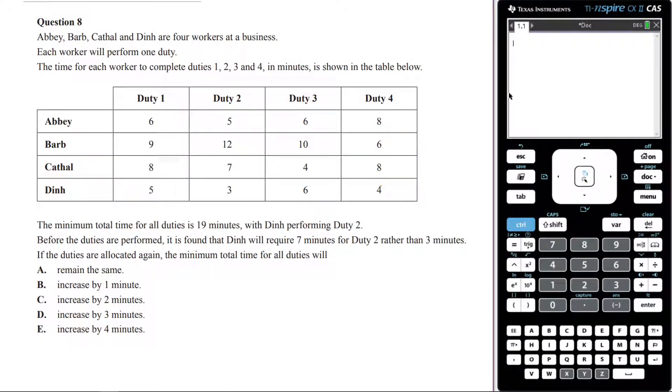Let's now answer the last question, which says: Abby, Barb, Cathal, and Dean are four workers at a business. Each worker will perform one duty. The time for each worker to complete duties 1, 2, 3, 4 in minutes is shown in the table below.